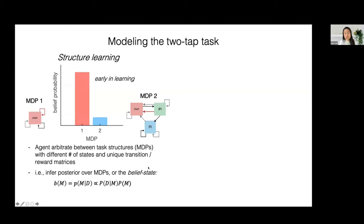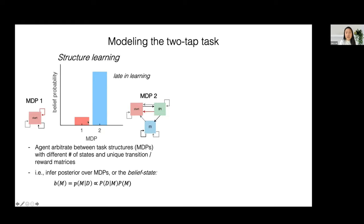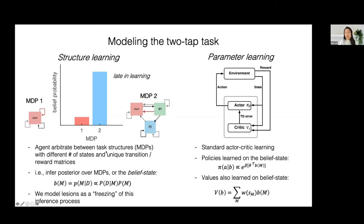We modeled this by allowing the agent to consider two different MDPs: the first being a world with just one state, and the other being accurate to the actual task with both IPI and ITI states. Over learning, the agent learns that the second MDP is the more faithful representation of the world and updates the posterior accordingly. In our simulations, we model lesions as a freezing of this inference process — no more updating of the belief state after lesion. The parameter learning component learns the correct state-action mapping given a particular MDP, taking the form of a traditional actor-critic setup, with policies and values learned on the belief state since the actual state is not known.